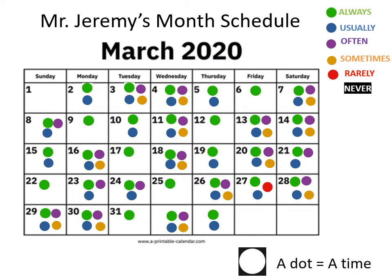Còn đây là ví dụ về lịch làm việc theo tháng của thầy Jeremy. Số lượng chấm tròn màu xanh lá cây vẫn rất nhiều — ngày nào cũng có. Chấm màu xanh dương ít hơn nhưng hầu như ô nào cũng có. Màu tím thì ít hơn nữa nhưng vẫn nhiều hơn những ngày không có. 'Sometimes' — số ngày có và không có chấm cam là bằng nhau. 'Rarely' chỉ có một cái, và 'never' thì không thấy — nghĩa là không bao giờ.